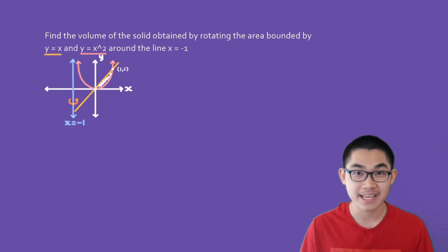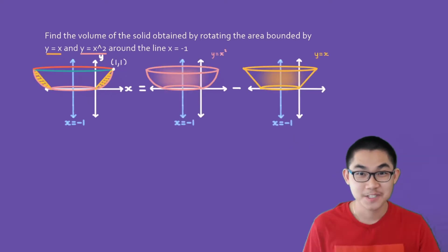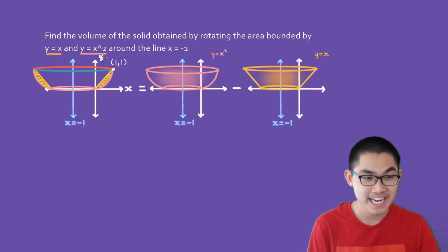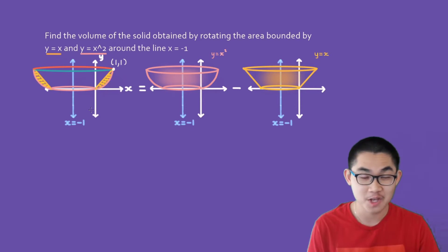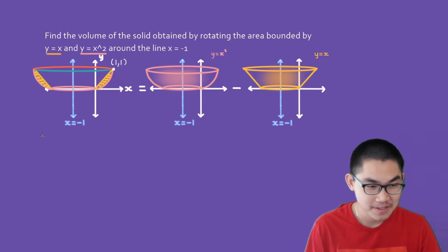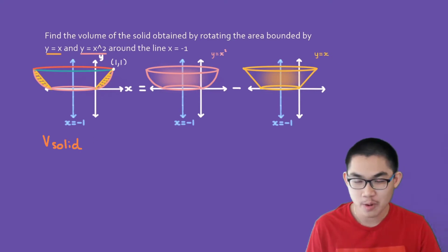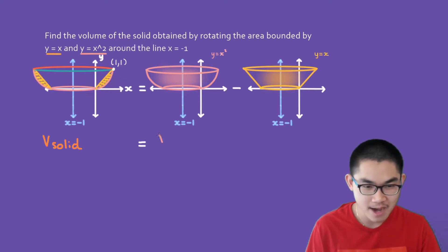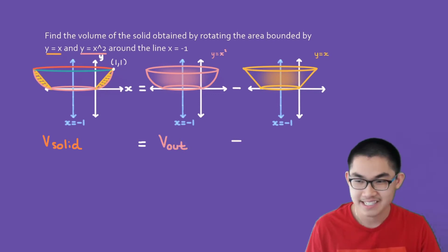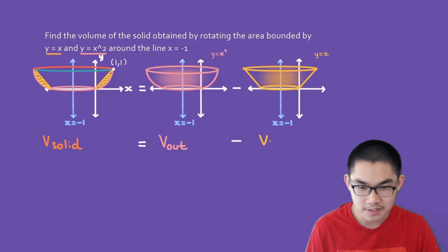We're going to get something like this — our three-dimensional object is going to look something like this. We want to find the volume of this solid. The volume of the solid, or V_solid, is equal to the volume of the outside function, V_out, minus the volume of the inner function, V_in.